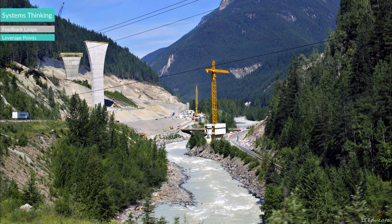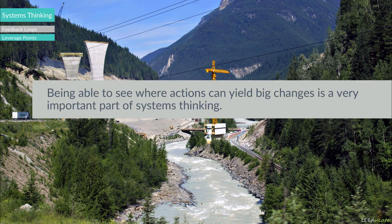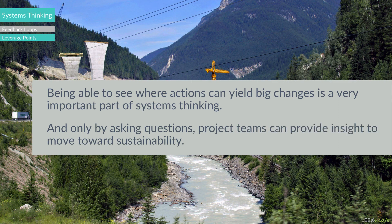This will then contaminate the farmlands, which will result in contaminated foods. However, by taking action to avoid sedimentation and pollution to the river — which is really a small action when considering the outcome — a whole river can be saved, which will also result in saving the farmlands and human health. Being able to see where actions can yield big changes is a very important part of systems thinking, and only by asking questions can project teams provide insight to move towards sustainability.